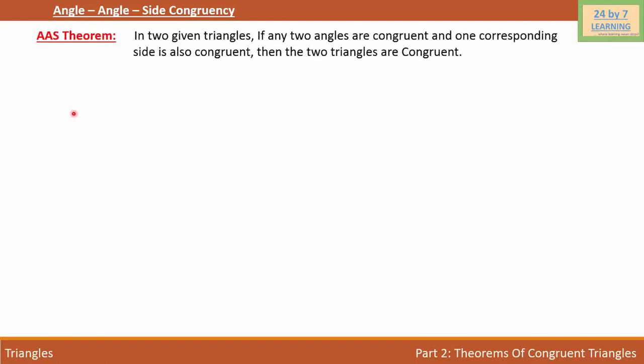Angle-Angle-Side congruency, AAS theorem. In two given triangles, if any two angles are congruent and one corresponding side is also congruent, then the two triangles are congruent.